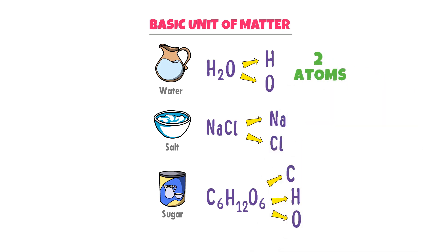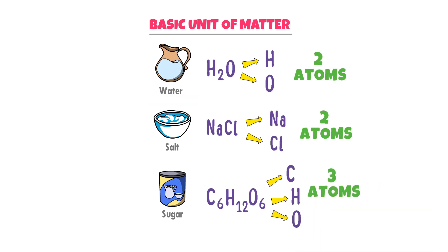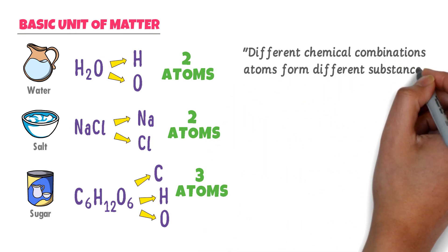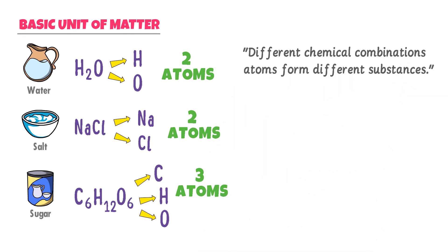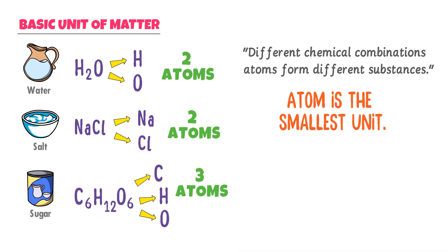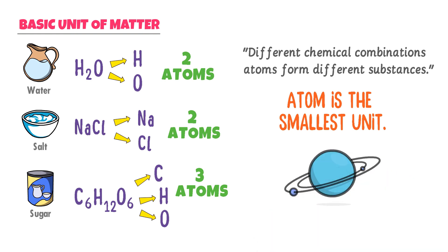So we can say that atoms form water, atoms form salt, and atoms form sugar. Different chemical combinations of atoms form different substances like water, salt, and sugar. Therefore, atom is the smallest unit or basic unit of every matter, and everything in the universe is made up of atoms.